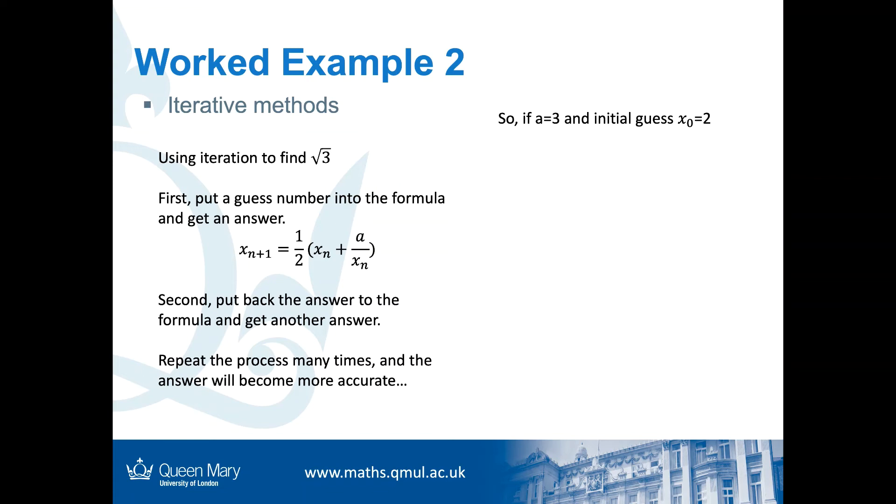So, now a = 3 and we have our initial guess x₀ = 2. Then, we can calculate x₁ = ½(x₀ + 3/x₀). x₀ is 2, and by calculation, we get x₁ = ½(2 + 3/2) = 1.75.